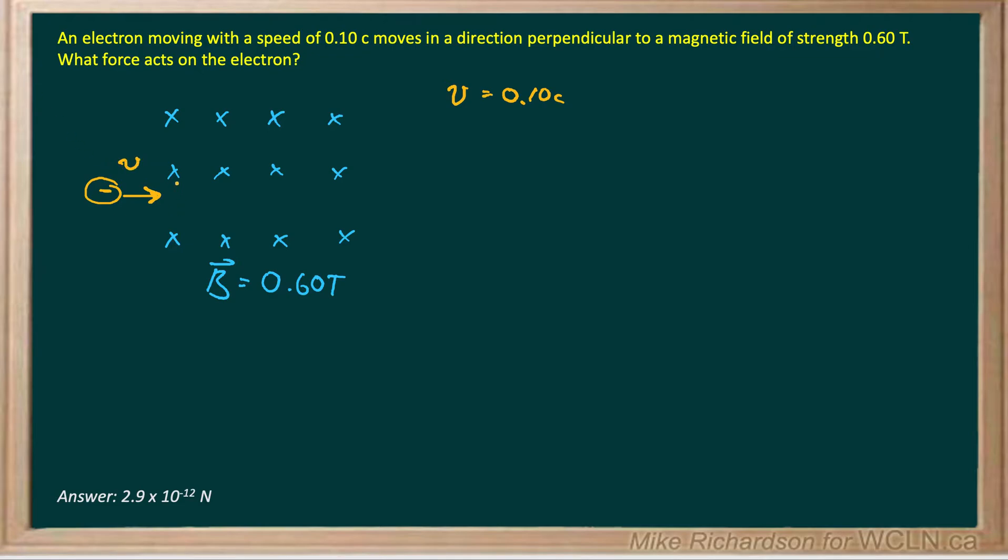And you can imagine, like if these are x's, there's a line coming from you into the page through the screen, basically. So this electron is going to cross those field lines at a 90 degree angle, so we've satisfied this perpendicular condition.